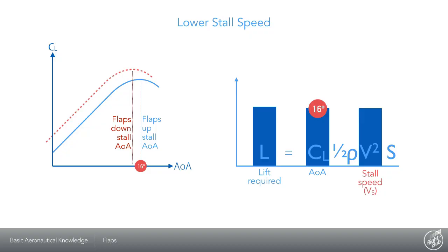As this graph indicates, the wing's ability to generate lift increases with flaps down. According to the lift formula, greater ability to generate lift translates to a lower stall speed once the stall angle of attack has been reached.